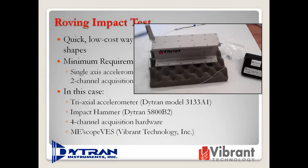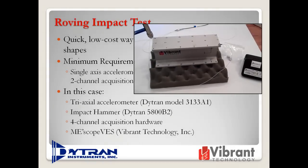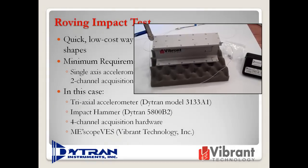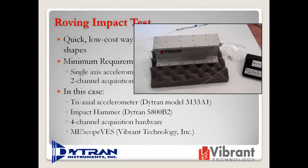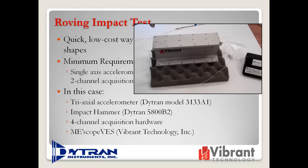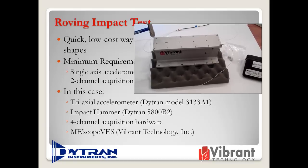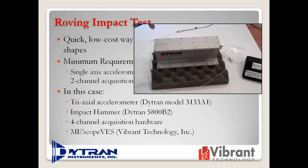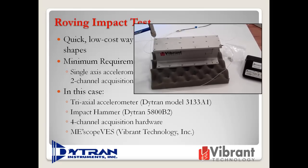In this video, a roving impact test is performed on a simple I-beam using a DITRAN model 3133A1 tri-axial accelerometer, a DITRAN 5800B2 impact hammer, a four-channel acquisition unit, and Vibrant Technologies Emiscope VES.